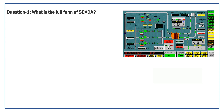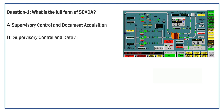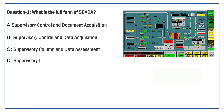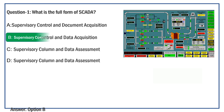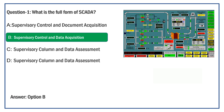What is the full form of SCADA? Option A: Supervisory Control and Document Acquisition. Option B: Supervisory Control and Data Acquisition. Option C: Supervisory Column and Data Assessment. Option D: Supervisory Column and Data Assessment. The right answer is Option B: Supervisory Control and Data Acquisition.